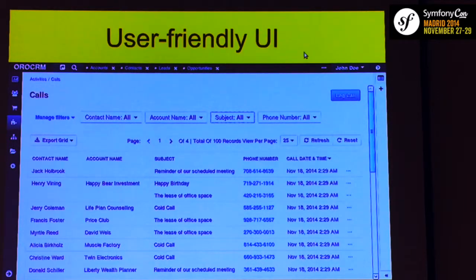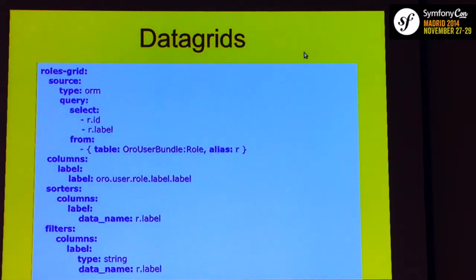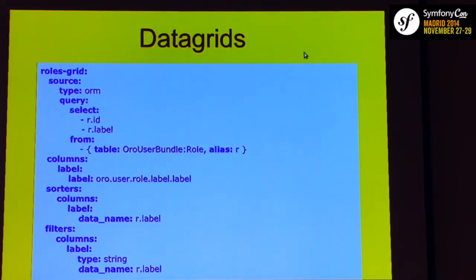Data grids in our platform are defined in a declarative style — in YAML format. This configuration is all you need for a data grid. You don't have to add additional handlers or classes, or worry about how the grid works with the system. You just need to write configuration in YAML format, define some options, and add a special Twig function where you want to render the grid. It will be rendered, handled, and will use AJAX requests to handle behavior — whatever you need.